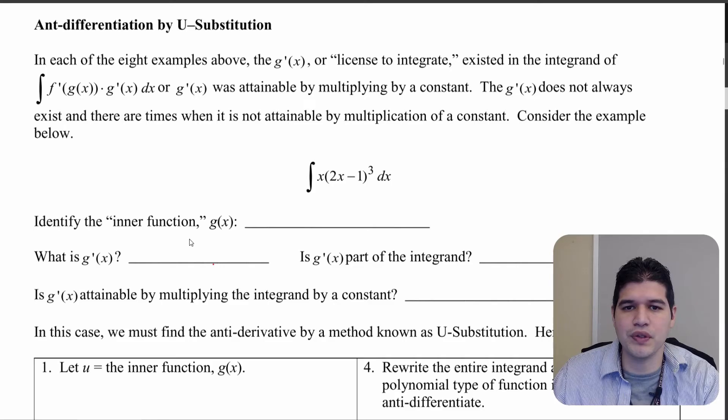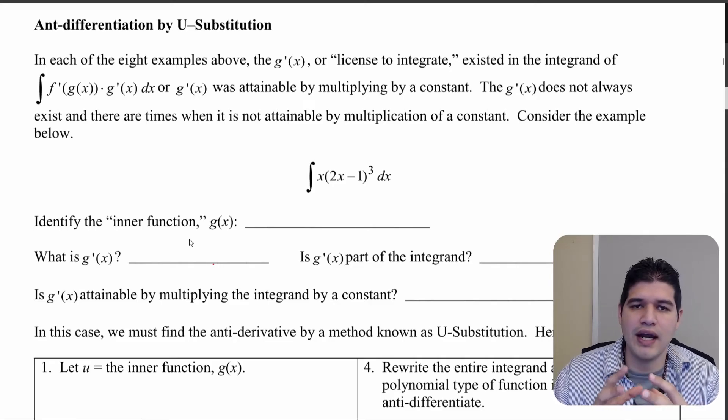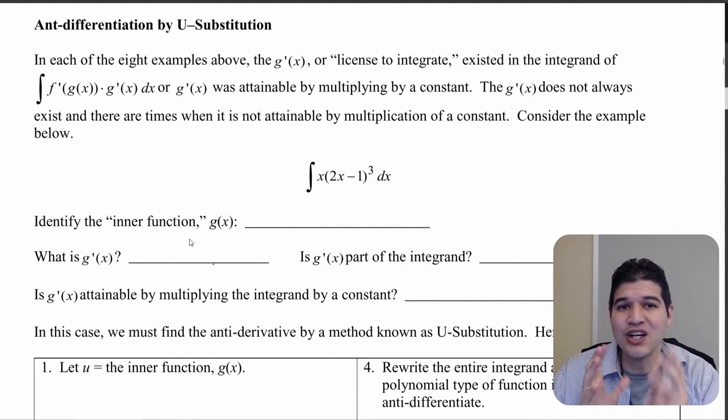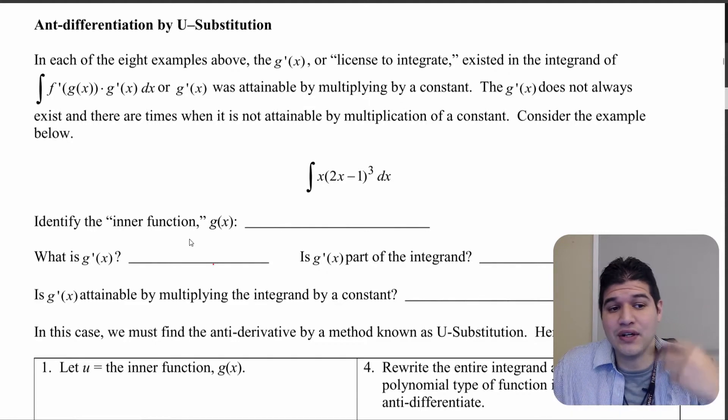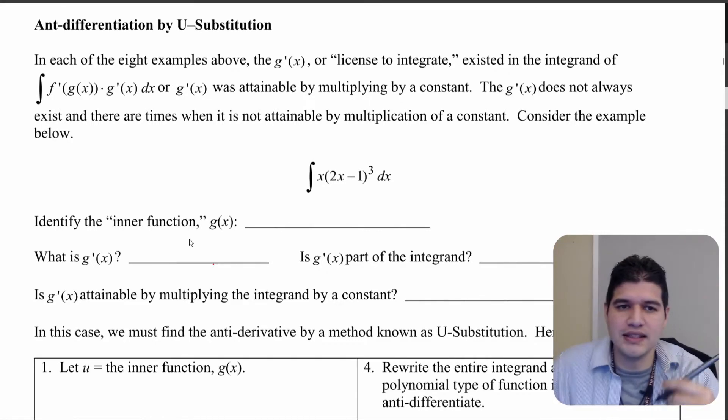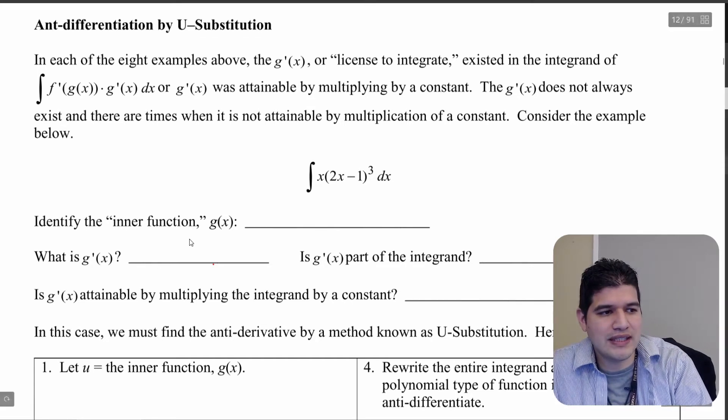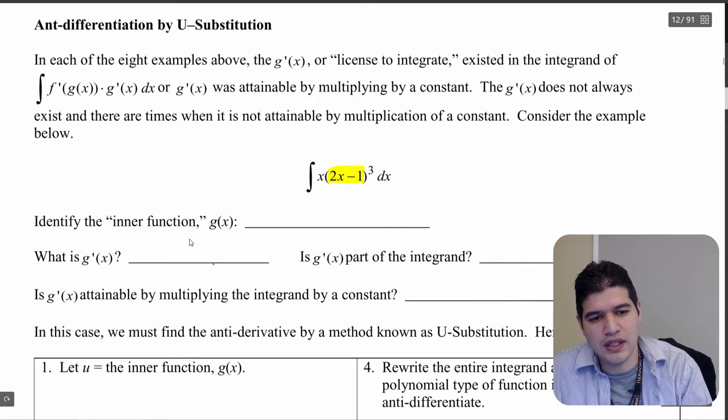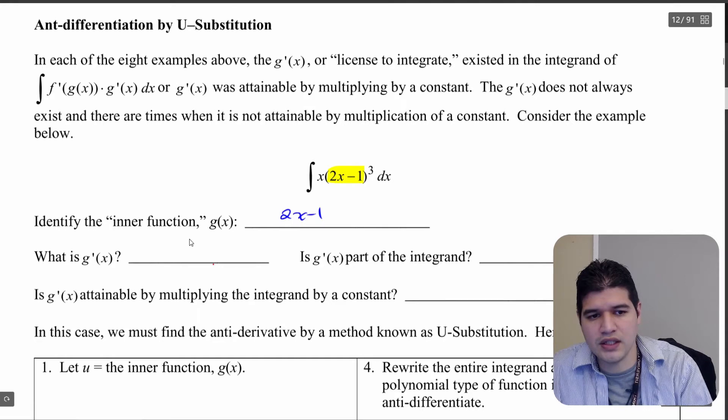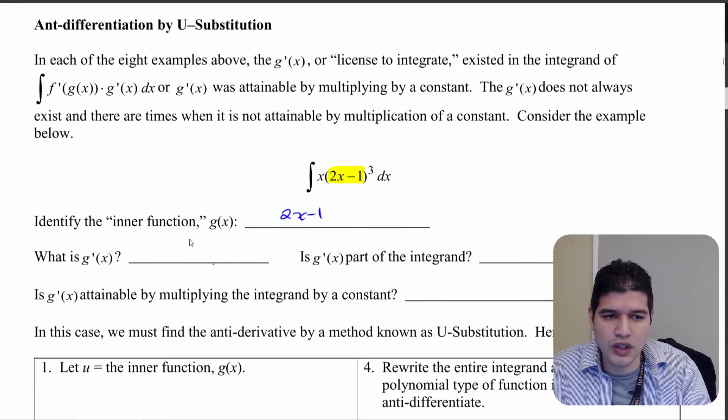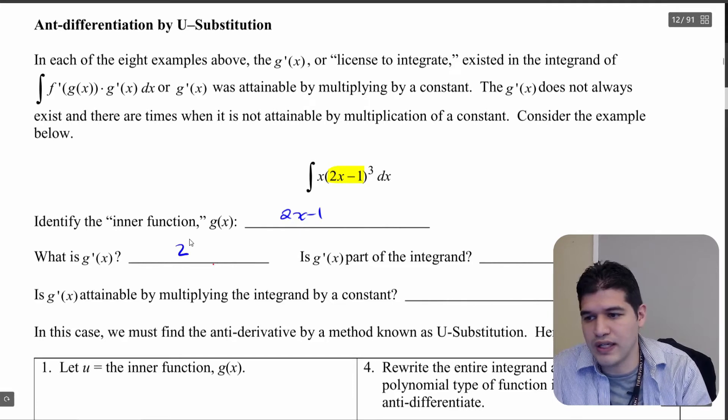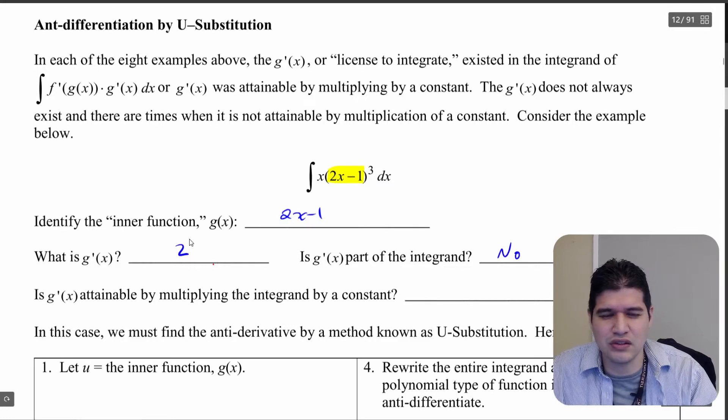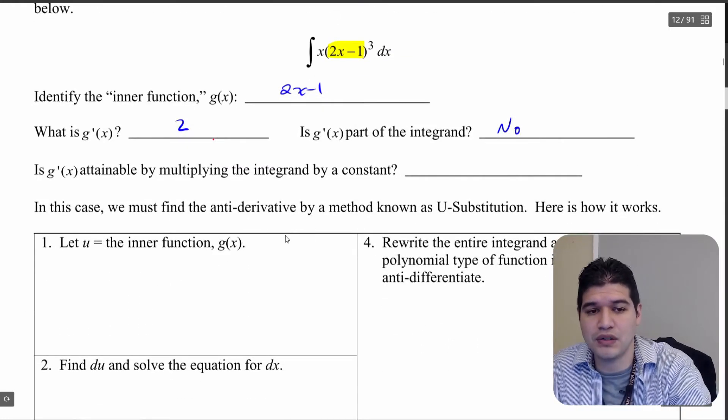So in our previous video on the problems that we were looking at, the integrand always had the g prime of x, the derivative of the inner function was always around. But that's not always going to be the case. So even if we can multiply by constant, it may not always work out. So let's look at this example here where the inner function is going to be 2x minus 1. So let's write down that the inner function is 2x minus 1. So what's the derivative that we're looking for here? Well we're looking for something that says 2. So is that part of the integrand? No it isn't. So this is already looking a little bit different than some of the problems we've done before.